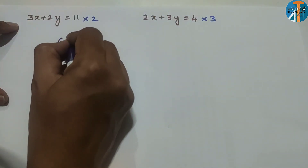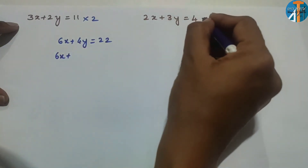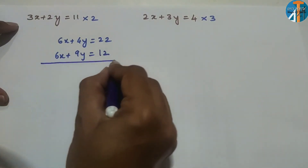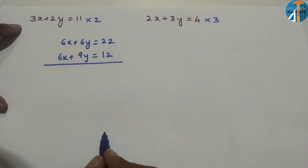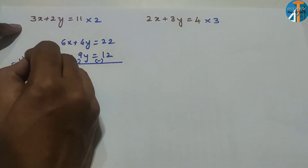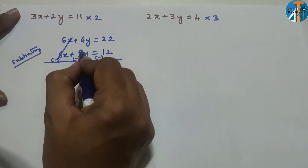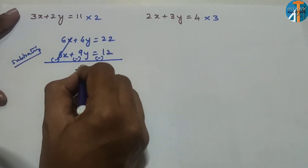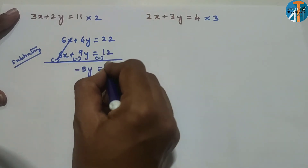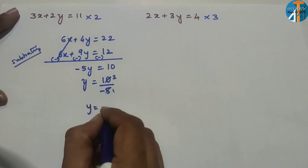Multiply the first equation by 2: 6x + 4y = 22. Multiply the second equation by 3: 6x + 9y = 36. Now 6x and 6x are the same — plus and plus — so we change the sign and subtract. 6x minus 6x cancels. 4 minus 9 gives minus 5y. 22 minus 12 gives 10. So minus 5y = 10, meaning y = 10 divided by minus 5, therefore y = minus 2.